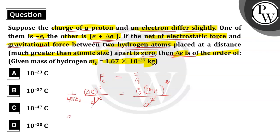So here, substitute 1 by 4 pi epsilon naught as 9 into 10 power 9 into delta E square should be equal to, so G value, that is universal gravitational constant.